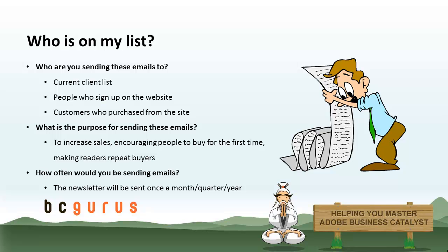More specific goal examples can be anywhere from generating at least $400 in sales directly from newsletter subscribers within the first week of each email being sent, to re-establishing direct contact with five previous clients, or something simple like 40% of subscribers who open the email. How often would you be sending emails? Determine the frequency — will you be sending the newsletter out once a month, once every quarter, or once every year?